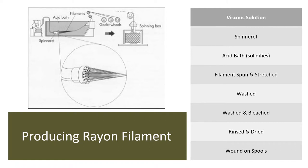To produce a rayon filament, the viscous solution is forced through a spinneret and is solidified by an acid bath, which turns the strands into regenerated cellulose filaments. These filaments are stretched, spun into yarn, washed, and bleached according to the desired filament to be made.